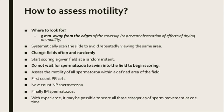Systematically scan the slide to avoid repeatedly viewing the same area. Change fields often and randomly. Start scoring a given field at a random instant — do not wait for spermatozoa to swim into the field to begin scoring. Assess the motility of all spermatozoa within a defined area of the field. First count progressive cells, next count non-progressive cells, and finally immotile spermatozoa. With experience, it may be possible to score all categories at one time.